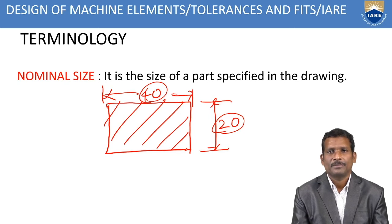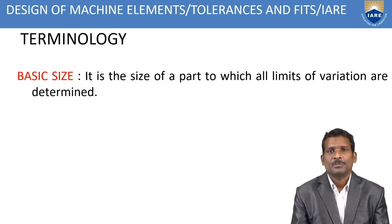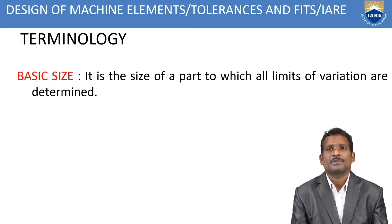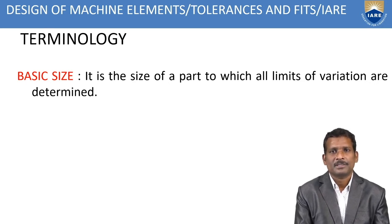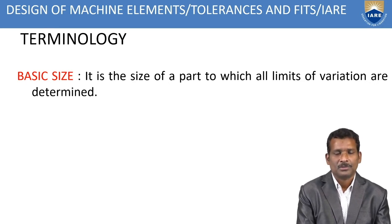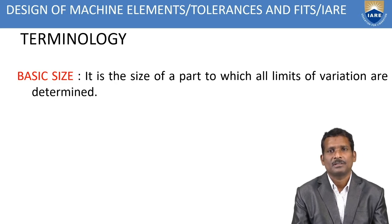That is the size specified in the drawing. But in actual condition, it may differ. Basic size is the size of the part to which all limits of variation are determined. The nominal size and the basic size are equal — both are the same.